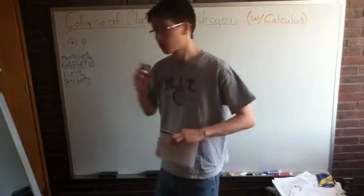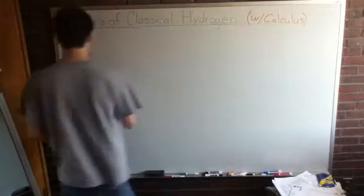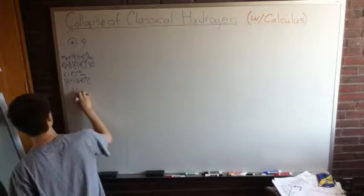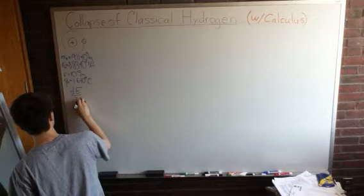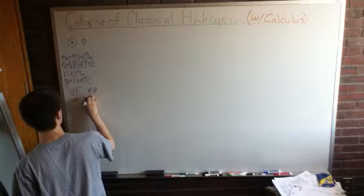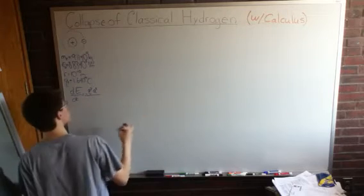We also have to write down another important formula, which is called the Larmor formula. And this states that the rate of change of energy with respect to time, so dE/dt, is equal to negative q squared a squared, where q is charge and a is acceleration,